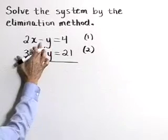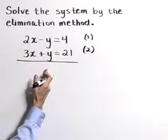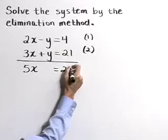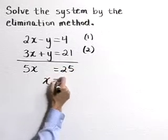As we add it together, this negative y and positive y are going to cancel out, leaving us with 5x is equal to 25 or x is equal to 5.